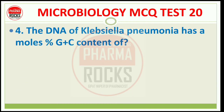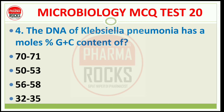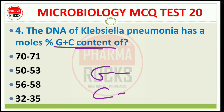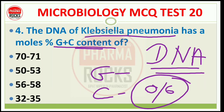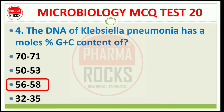Question number 4: The DNA of Klebsiella pneumoniae has a mole percentage G+C content of: 70–71%, 50–53%, 56–58%, or 32–35%? G मतलब guanine और C मतलब cytosine — DNA के main base pairs. The correct answer is option C: 56–58%. In molecular biology and genetics, GC content is the percentage of nitrogenous bases in a DNA or RNA molecule that are either guanine or cytosine.